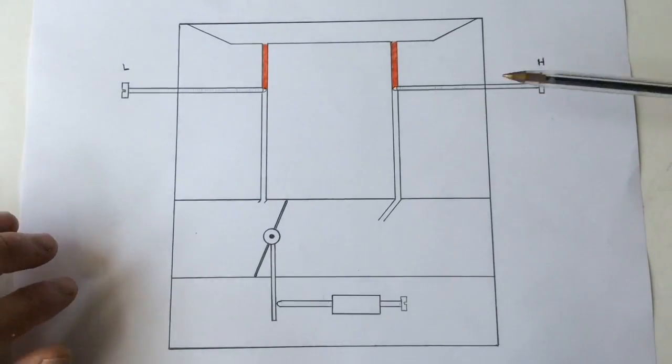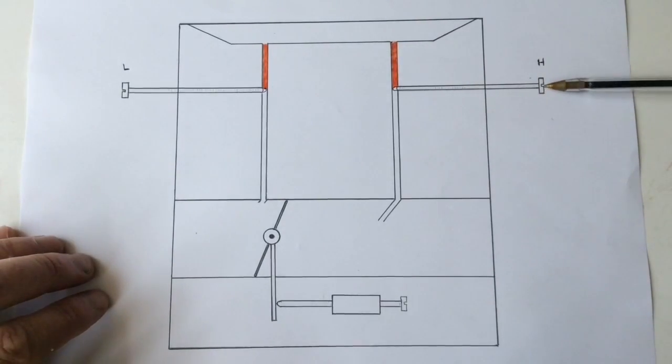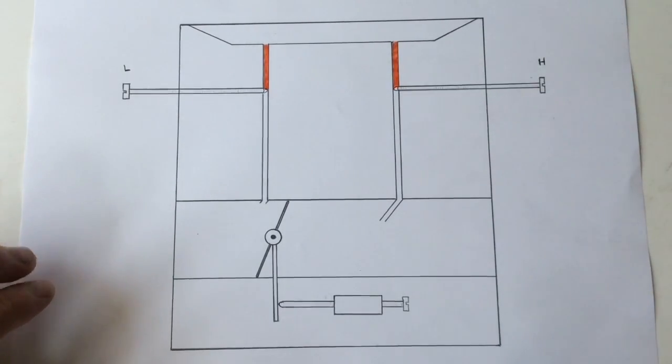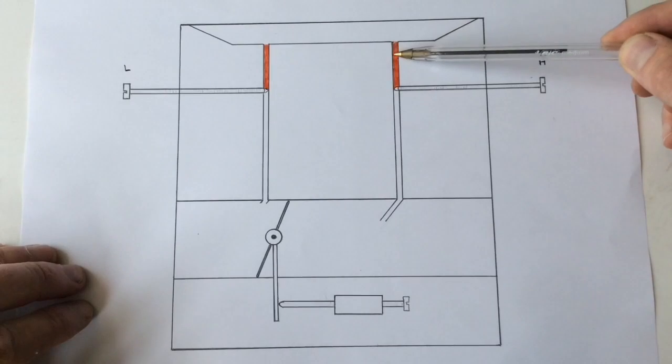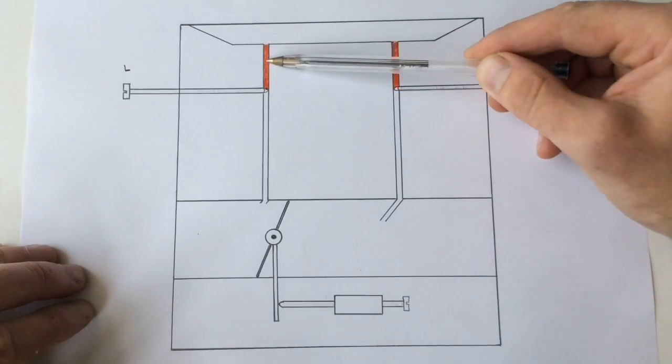And what I've done here, I've illustrated that we've screwed the high screw and the low screw right in until they stop. And what that's done is, that's prevented the fuel from going any further than this point. So it's come down and stopped there on both of them.